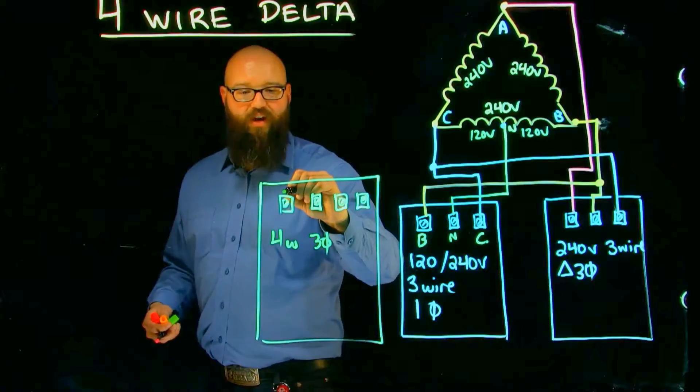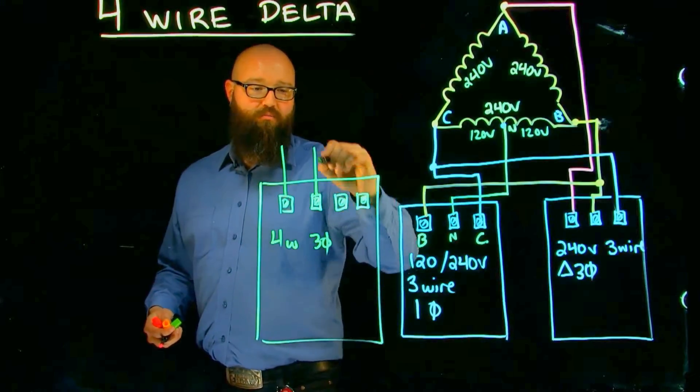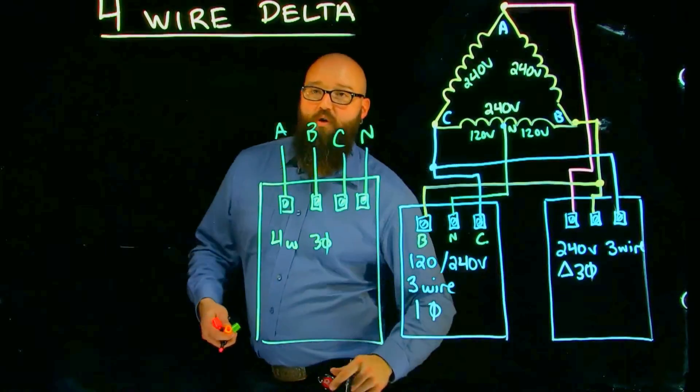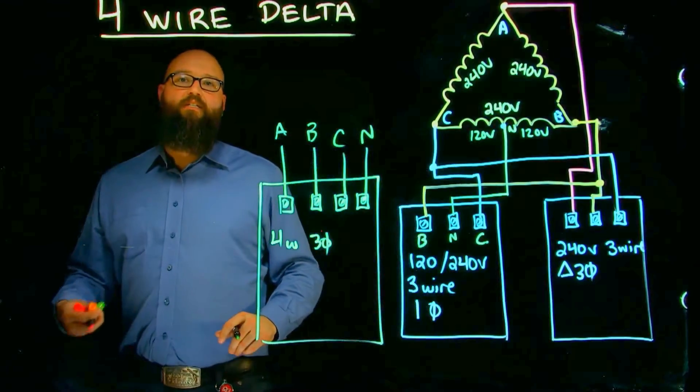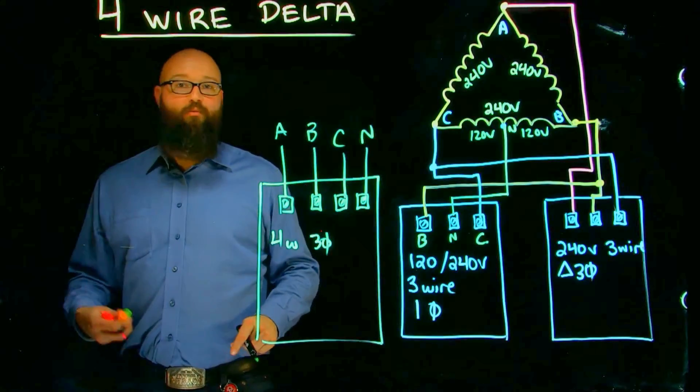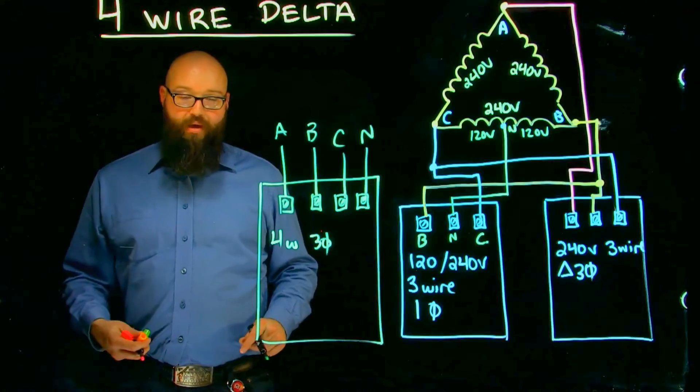The problem is, if I have line A here, B, C, and my neutral, well, we might accidentally connect a single-phase 120 volt load from A to N mistakenly, which would give us that 208 volt high leg. That would be bad.